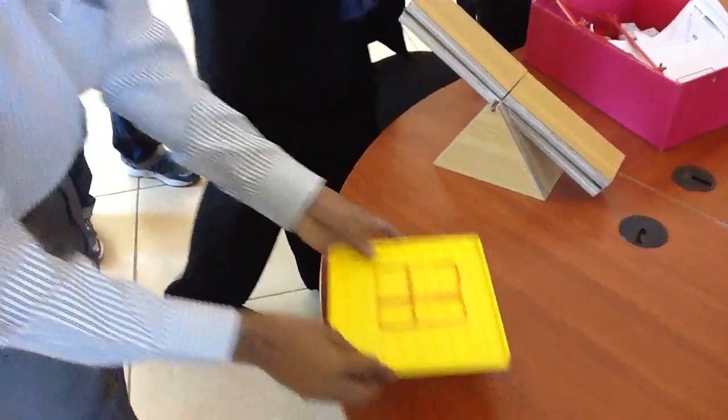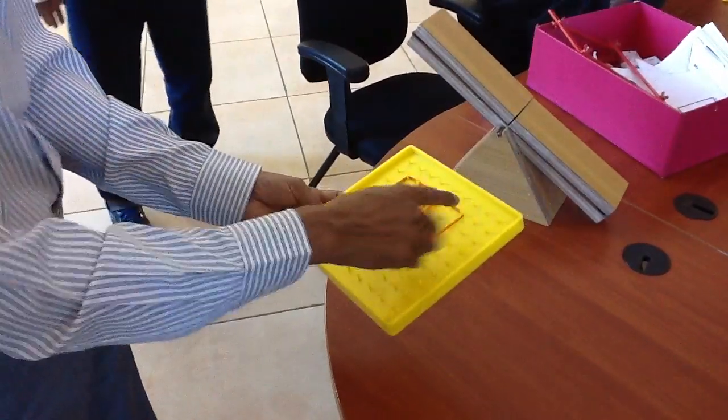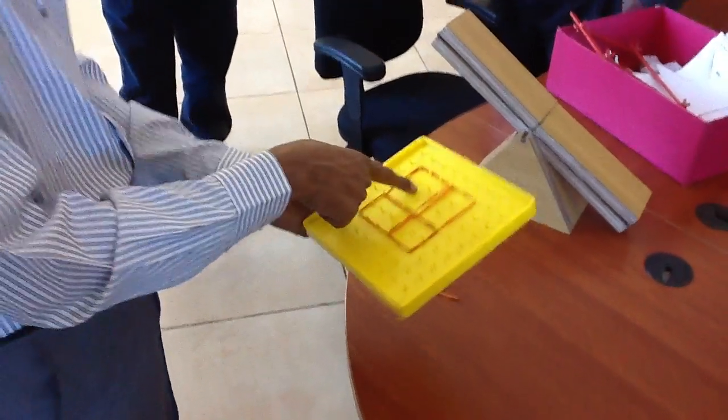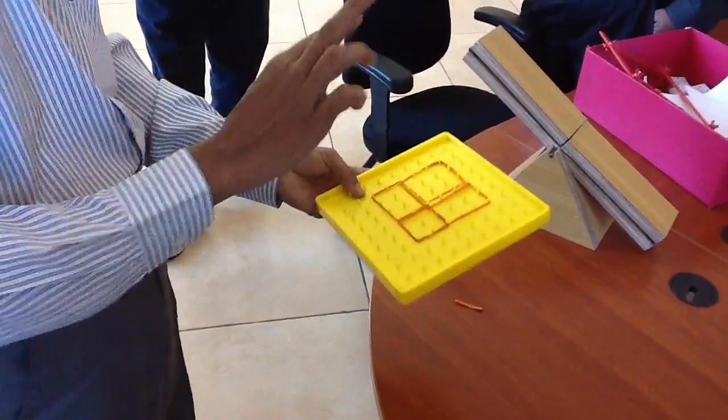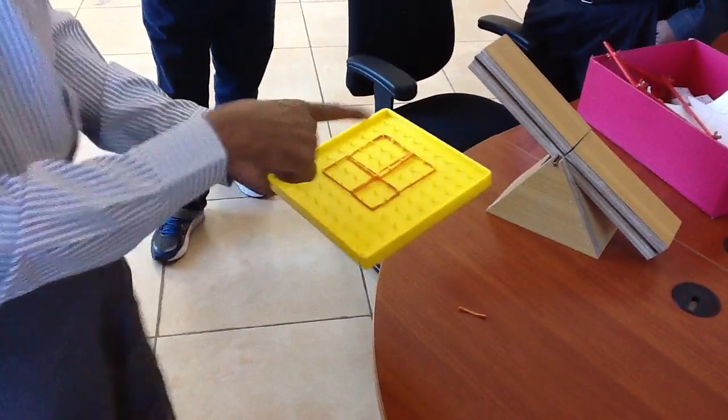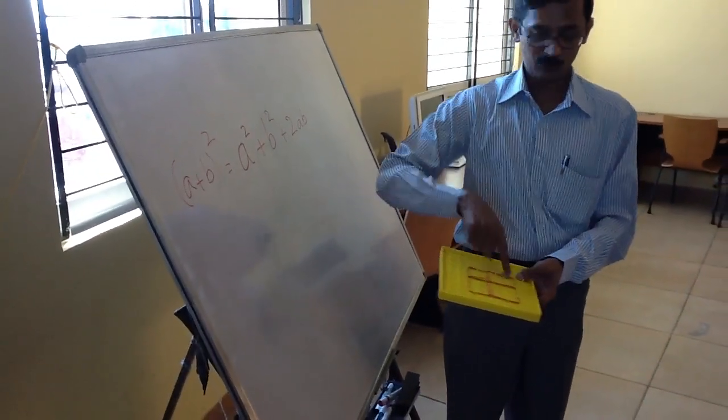So now what happened is the area of this one is AB. Area of this is AB. So what I am trying to explain with this is A square plus B square plus 2AB is A plus B whole square. So A plus B whole square is A square plus B square plus 2AB.